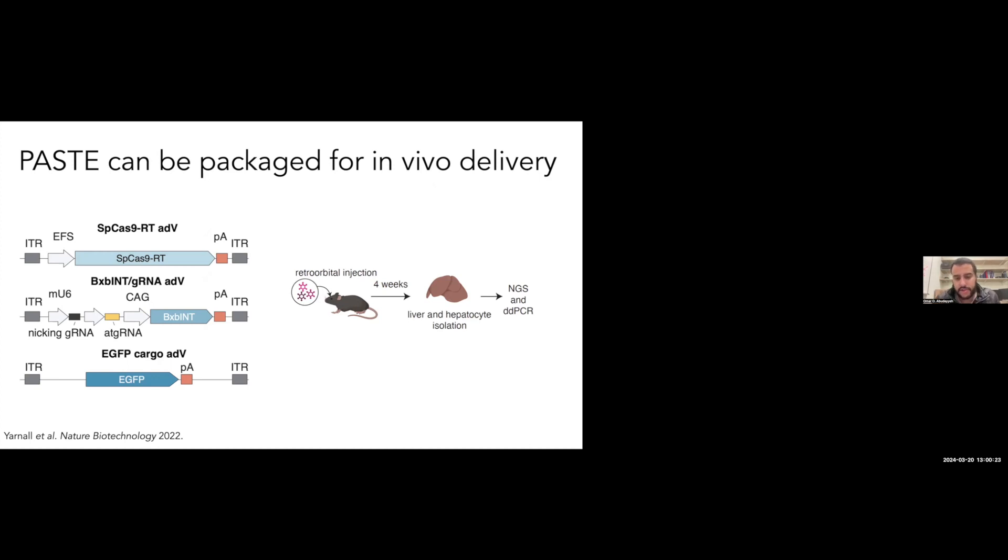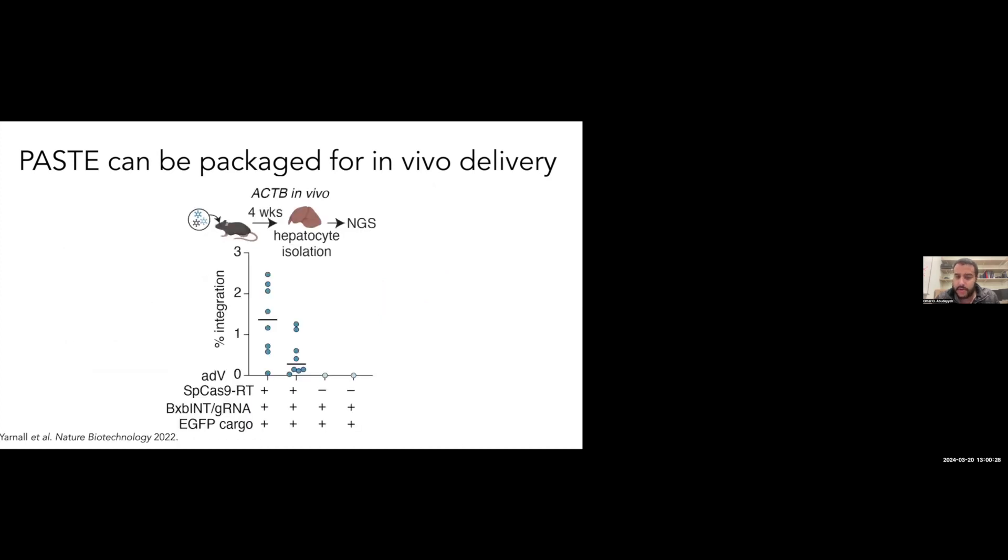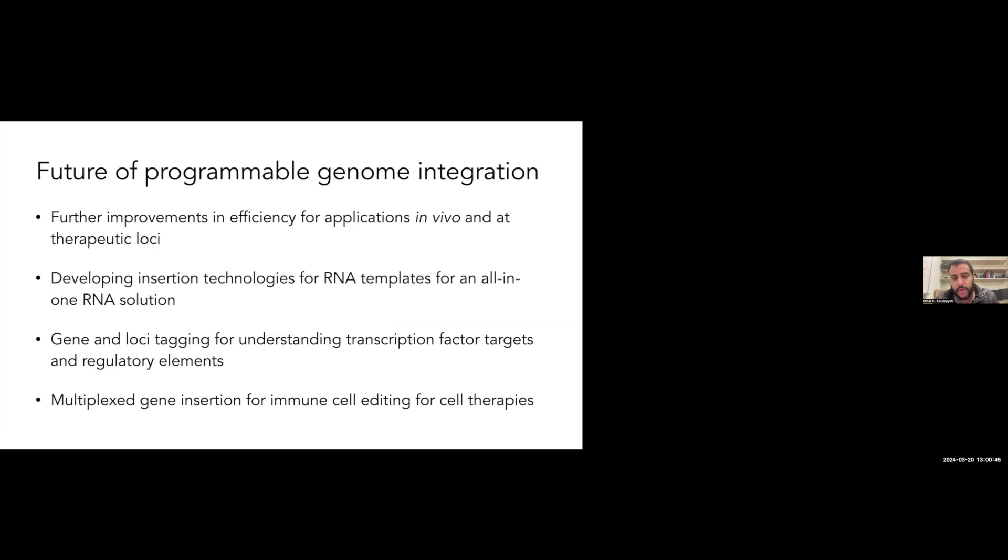One other thing I want to highlight is we were able to package this system into adenoviruses and demonstrate in humanized liver mice levels of insertion that were in the one to 2.5%, demonstrating that this approach can insert genes. In the paper you can also look at our indels which are almost non-existent, whereas if you try to do HDR in vivo you get like 30-40% indels and very little insertion. For future work we're now trying to develop LNP versions of this technology that don't require virus, as well as continue to engineer both integrases and other types of transposases for even higher efficiency gene replacement.